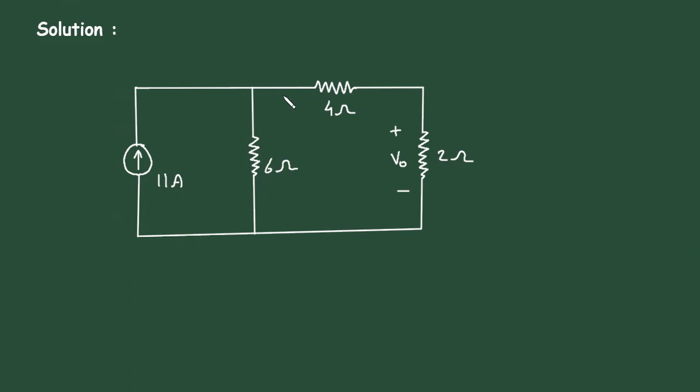Let's say this is current I1 and this is current I2. The current through 4 ohm and 2 ohm will be the same current, because these 4 ohm and 2 ohm resistors are connected in series.